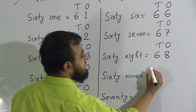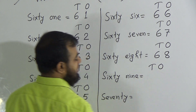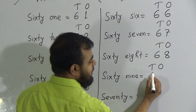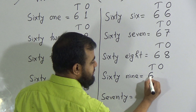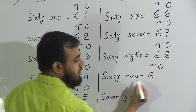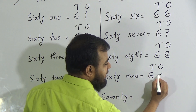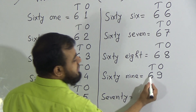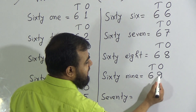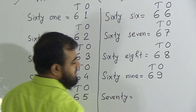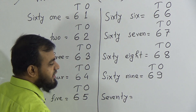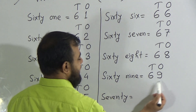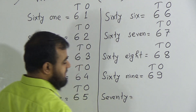The next number is 69 — tens place and ones place. To write 60, we write 6 in the tens place. To write 9, we write 9 in the ones place. So six tens and nine ones makes the number 69, or you can say six and nine makes the number 69.